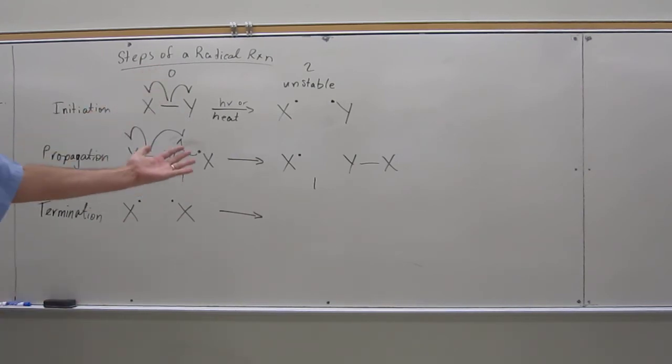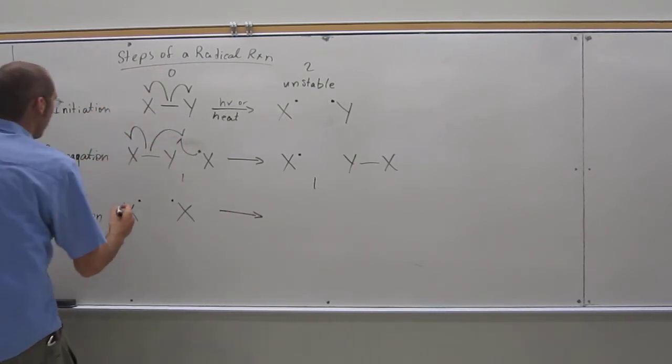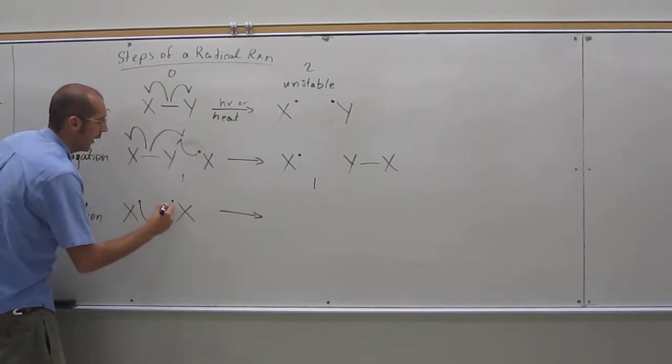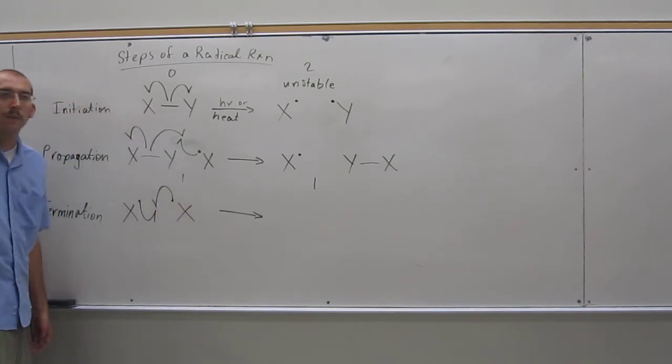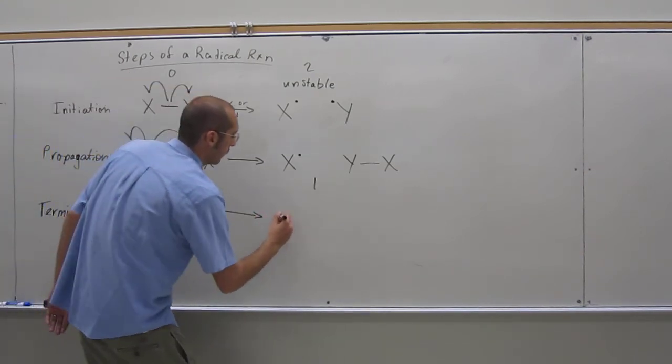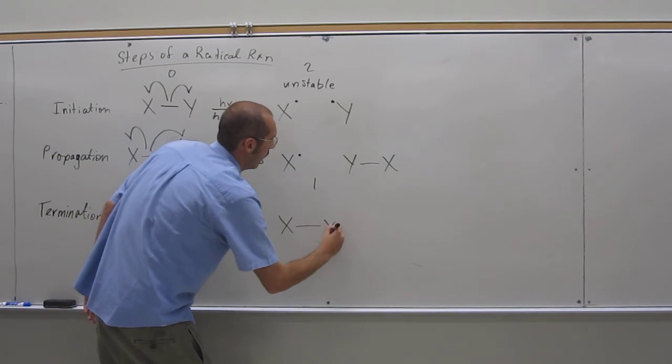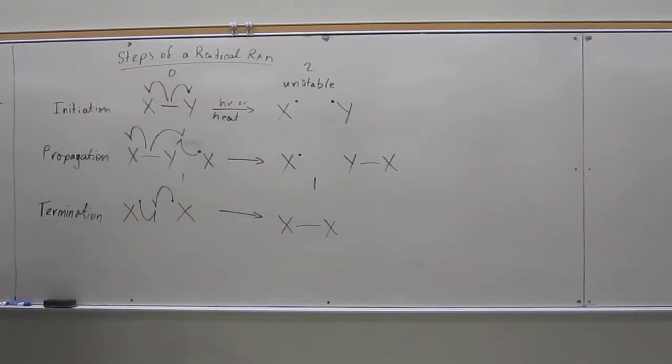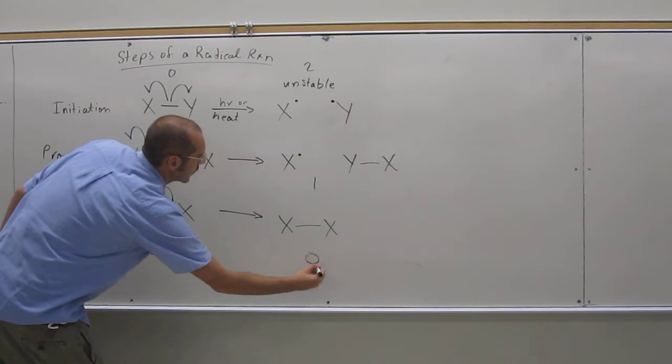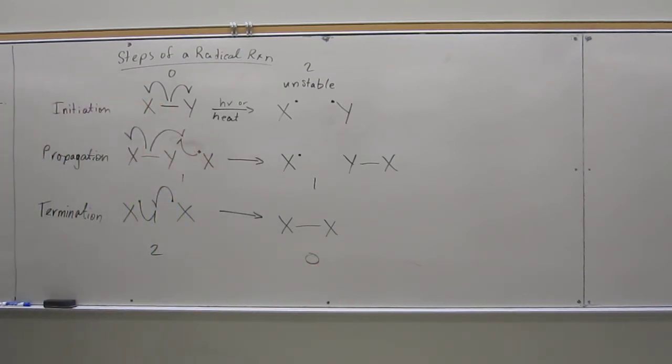And they'll be like a match made in heaven. They'll say, okay, you're reactive and I'm reactive, let's become stable. Like that. So if you go from two radicals to zero radicals, that's a termination step.